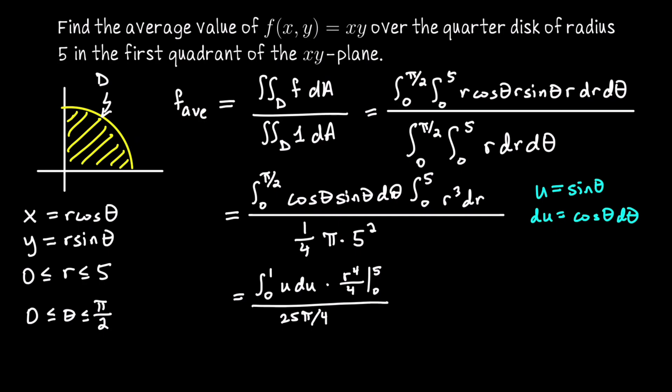Almost done. That first integral is u squared over 2 evaluated from 0 to 1. That's u squared over 2, plug in 1, you get 1 half, subtract off plugging in 0, but that's just 0.